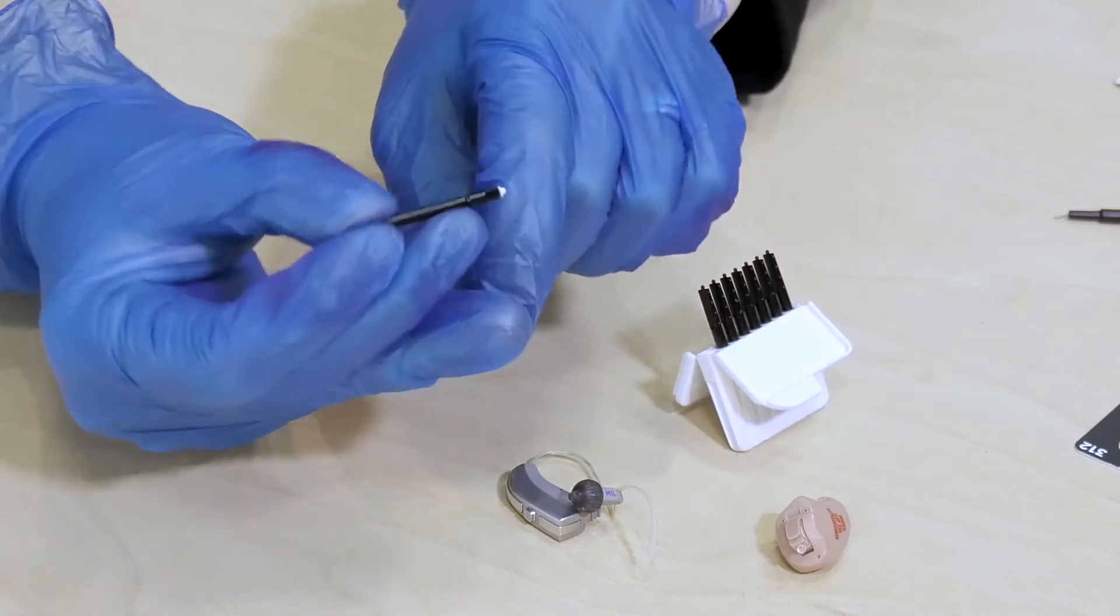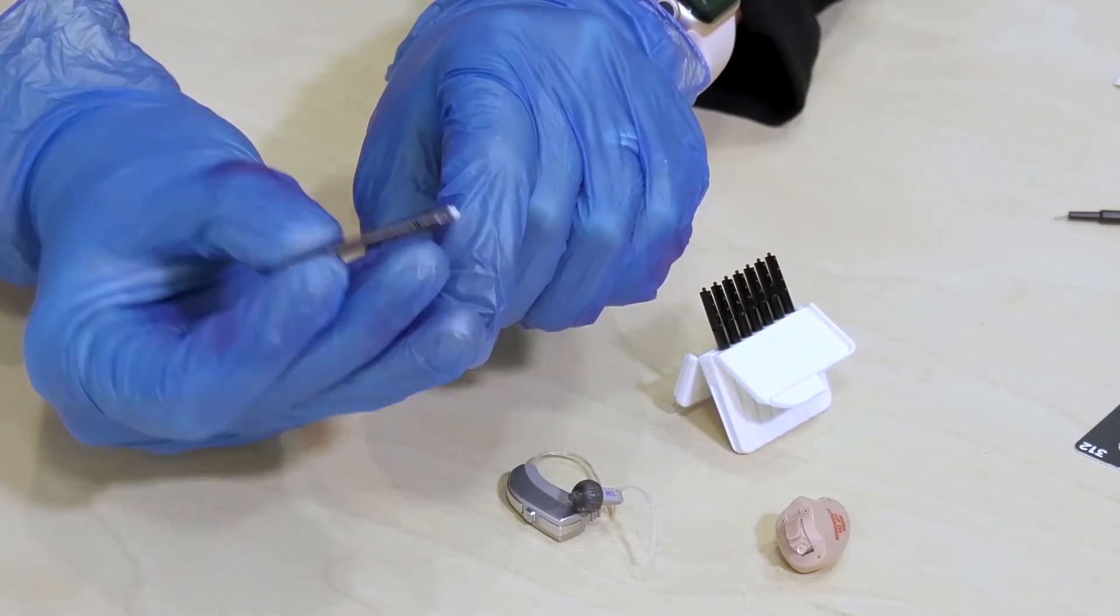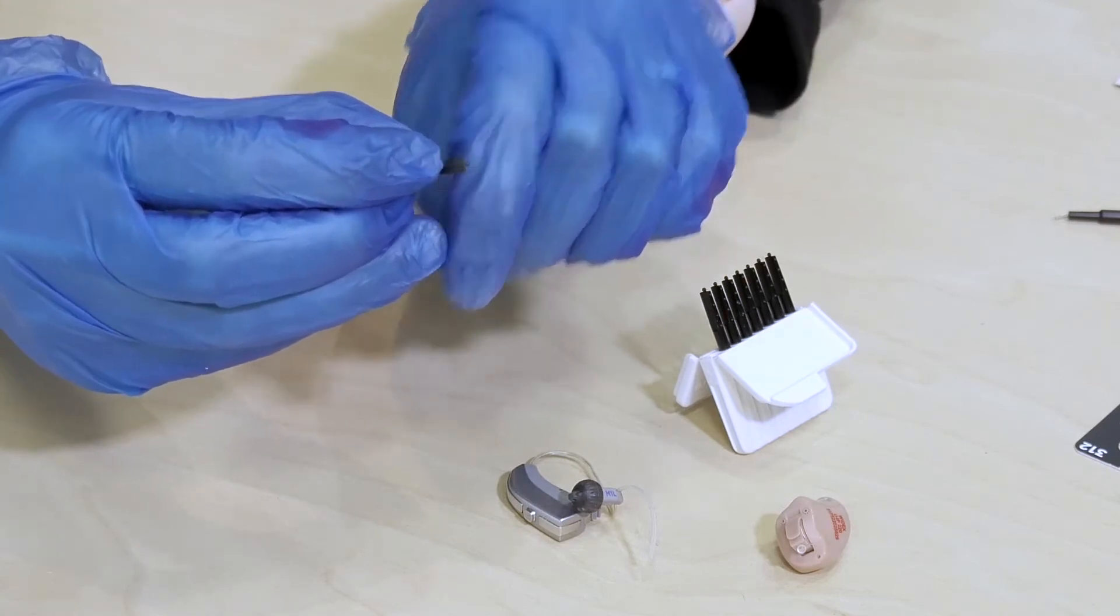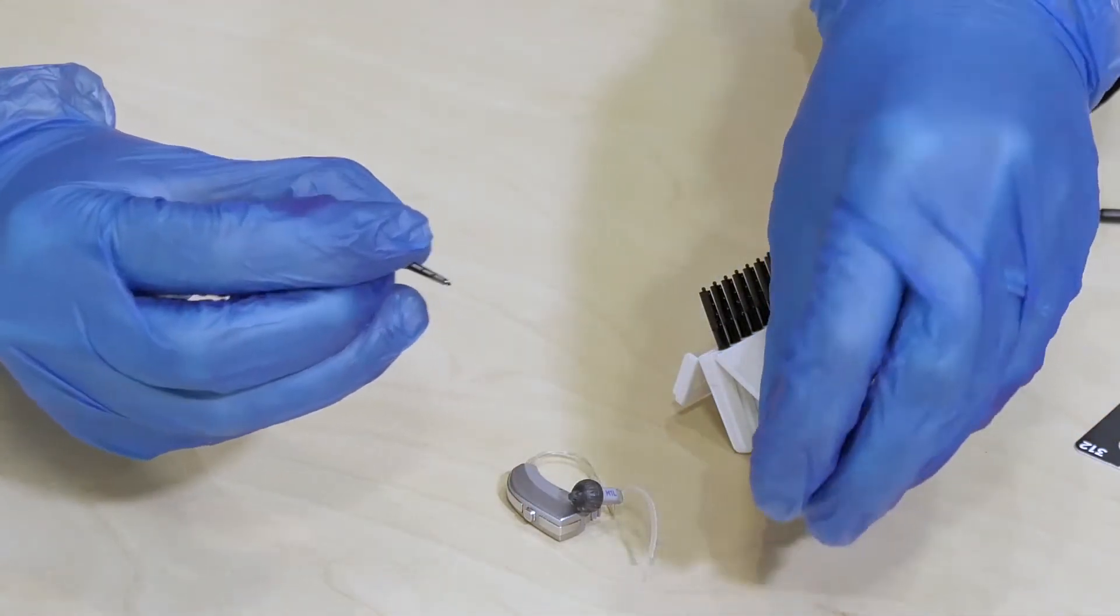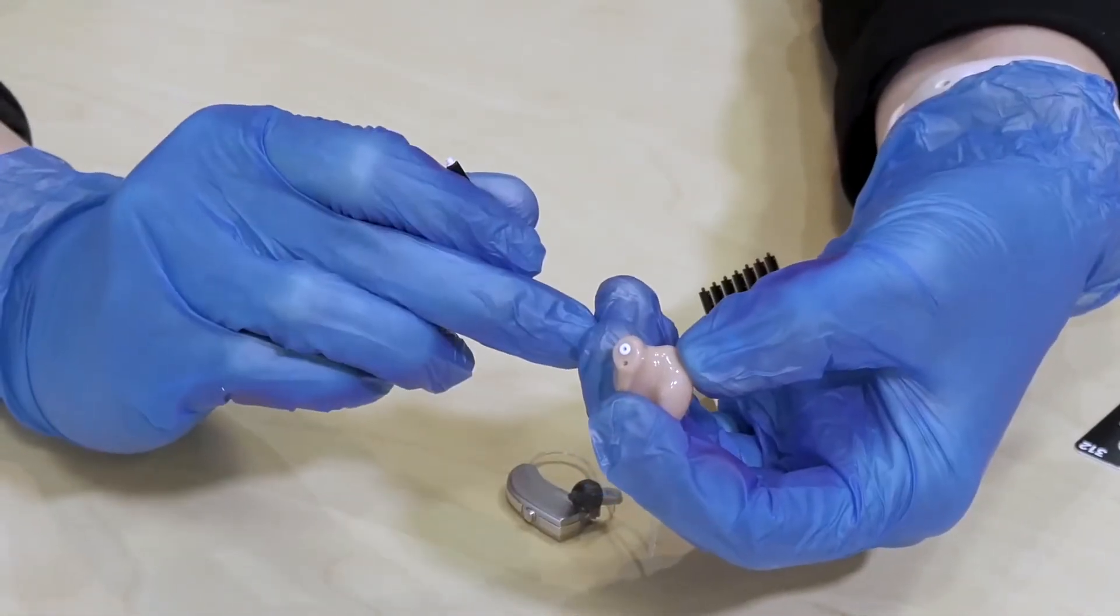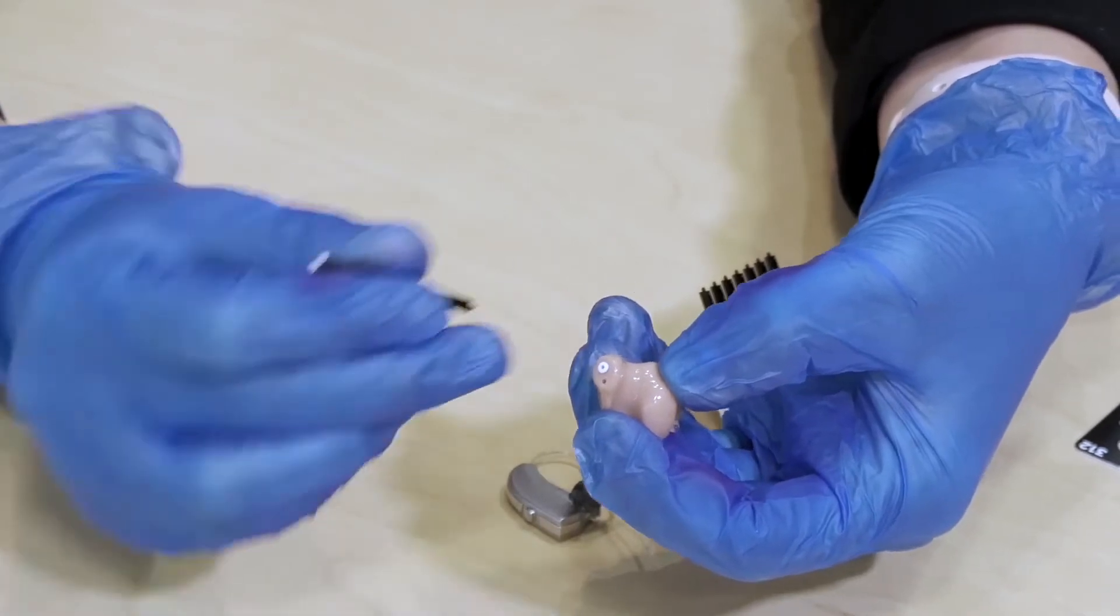Now you'll notice on one end there's a new little white filter and on the other end is just kind of a little barb device. Now in the custom one the only step that you need to do is to locate the old little white wax filter in the hearing aid.